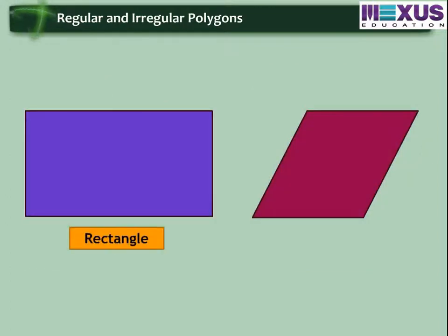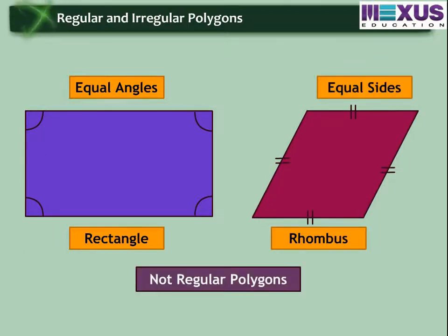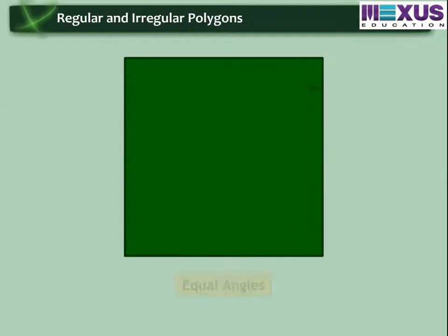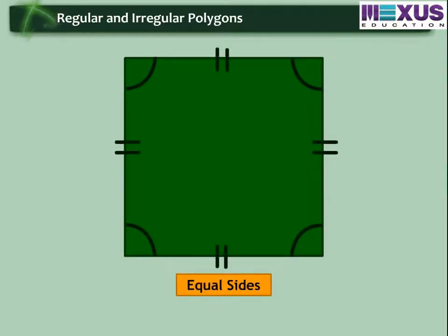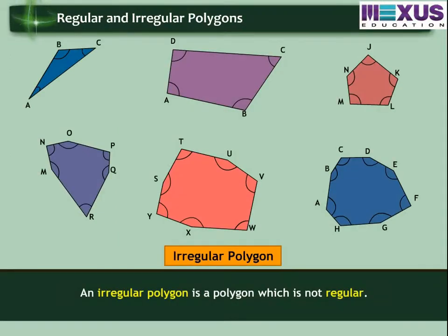Although a rectangle has equal angles and a rhombus has equal sides, yet these are not regular polygons. As for regular polygon, all of its angles should be equal and all its sides need to be of same length. That is why we can say that a regular polygon is both equi-angular and equilateral. While an irregular polygon is a polygon which is not regular. Here the sides and angles of a polygon are not equal.